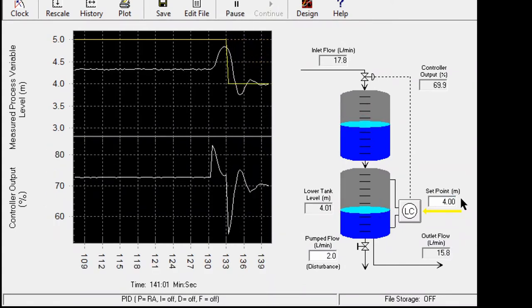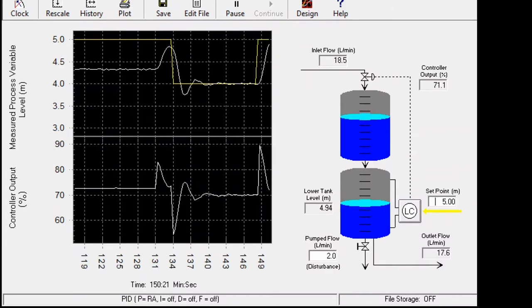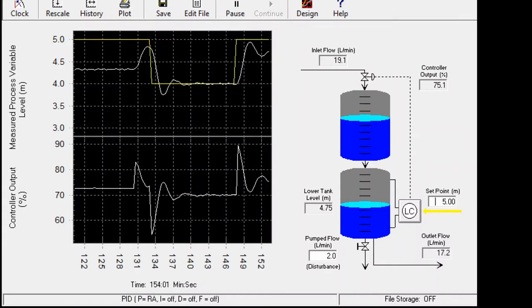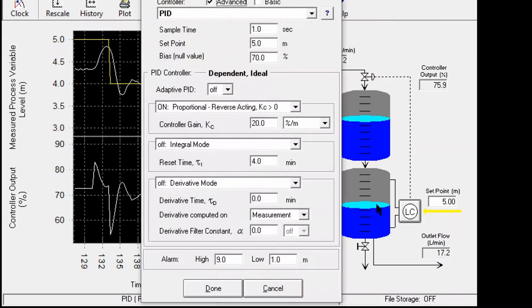We see that there are some oscillations but the process comes back to the initial value. Let's see how it responds when the setpoint goes up again. We see some sort of overshoot but with some oscillation.